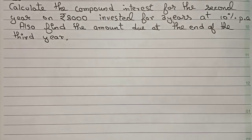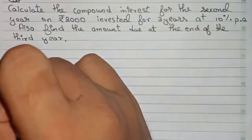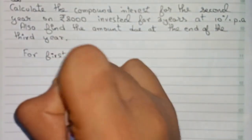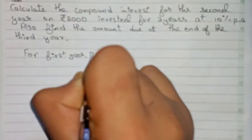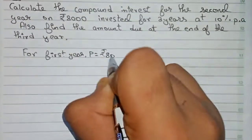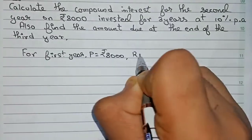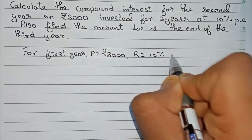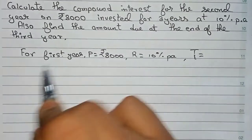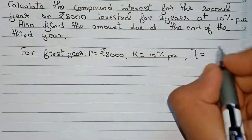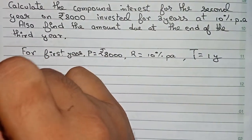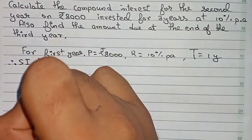For the first year, P (principal) is equal to 8000. R (rate) is equal to 10 percent per annum. And time — since it is the first year — will be one year.